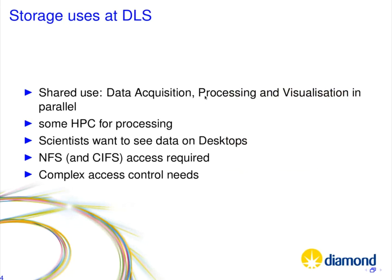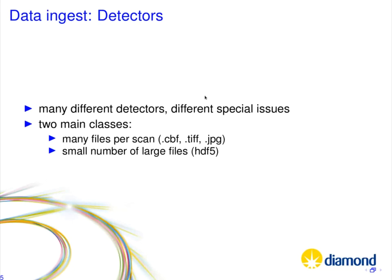Our storage is definitely shared use: for data acquisition, for processing, and for visualization. Our scientists want to see the data directly — things like typing 'ls' into the directory where data is collected just to see if it appears on disk. For processing, we have some high-performance computing, because some processes rely heavily on having many jobs go through very fast. Scientists want to see data on their desktops, which brings NFS and CIFS as requirements. We have Linux, Windows, and Mac desktops. And because we need to control who can see what data depending on who ran the experiment, we have some fairly complex access control issues.